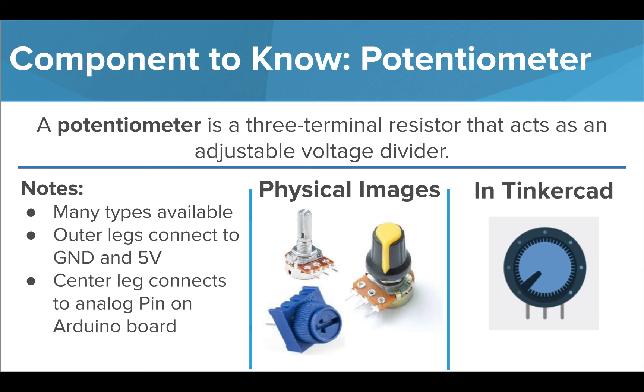The outer pins of a potentiometer connect to the ground and 5-volt pins, and the center pin is connected to an analog Arduino pin, either in the analog section of the board or a pin with a tilde symbol. There are many different types of potentiometers, so yours may look a bit different from the images shown here, but they all work the same way, which you'll explore in the next activity.